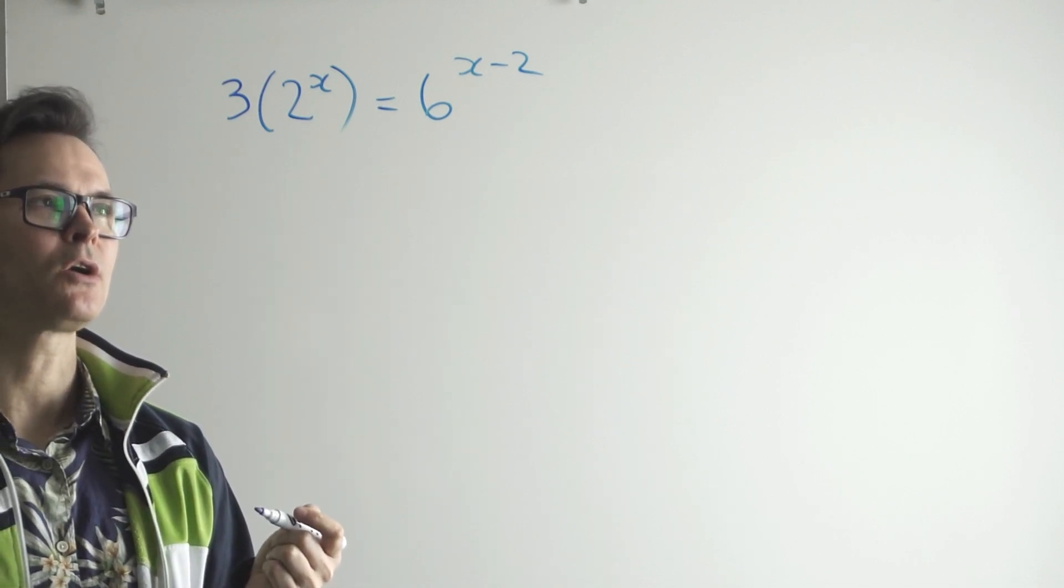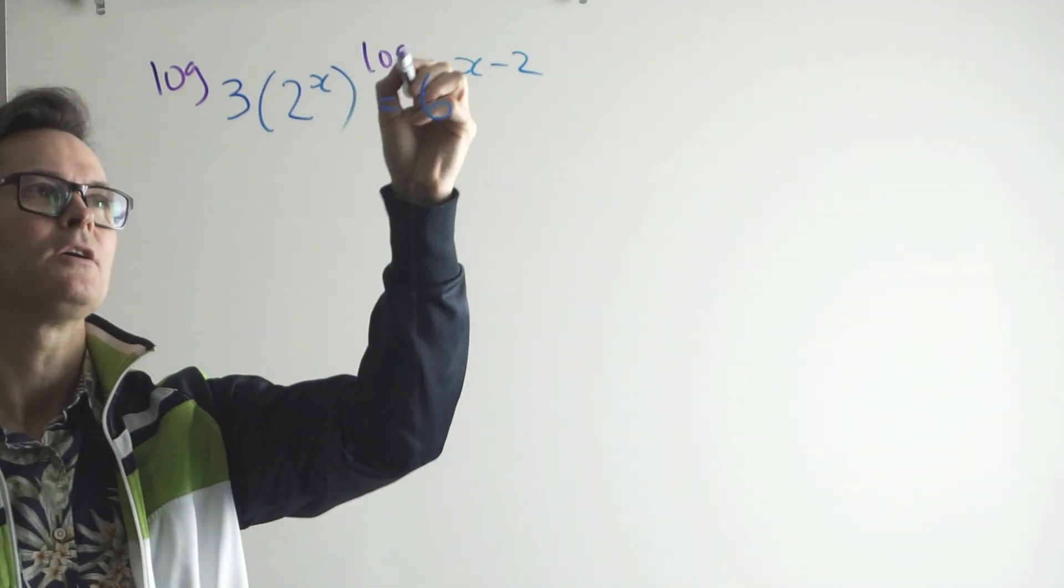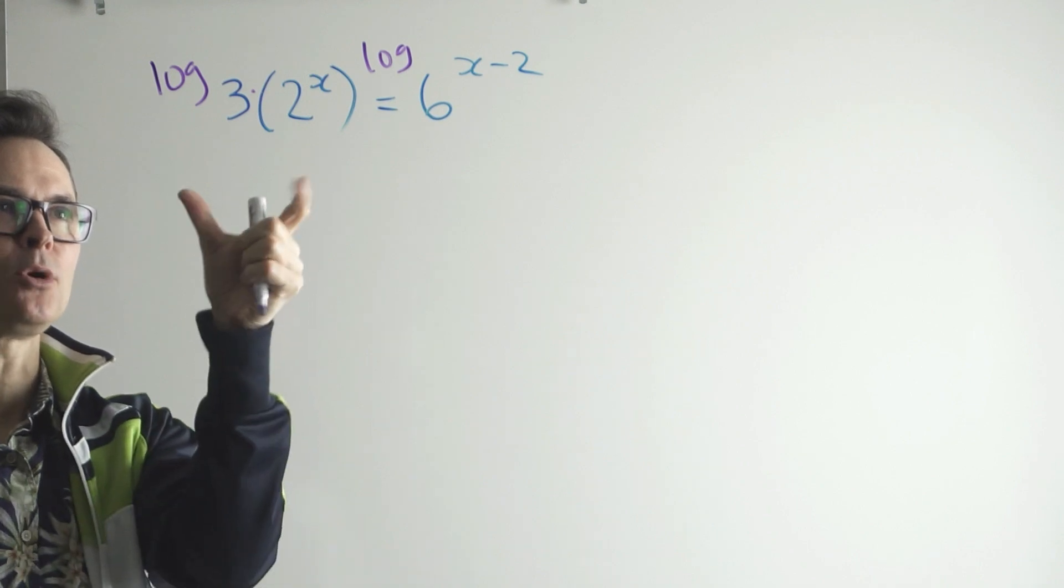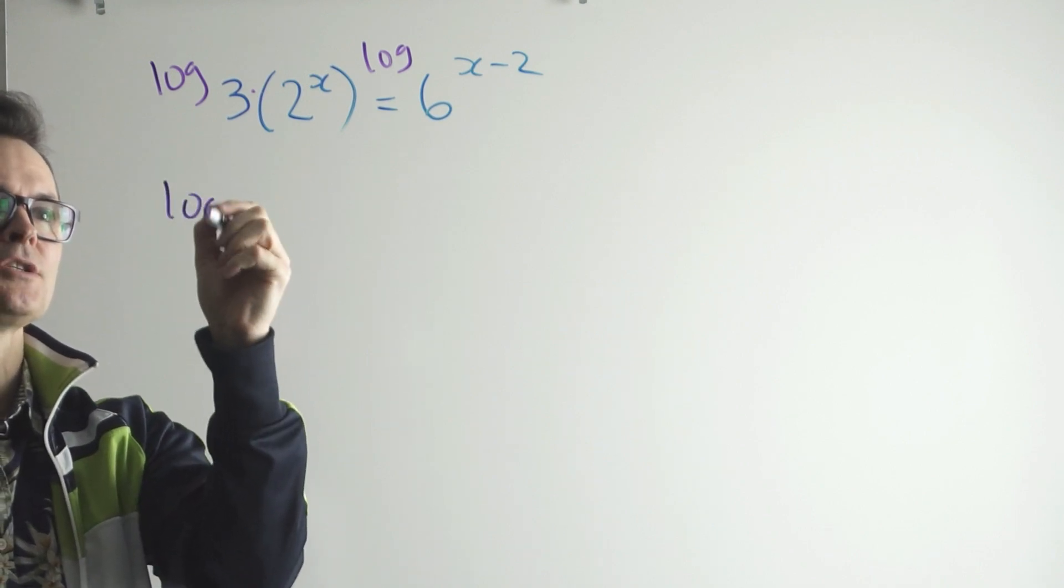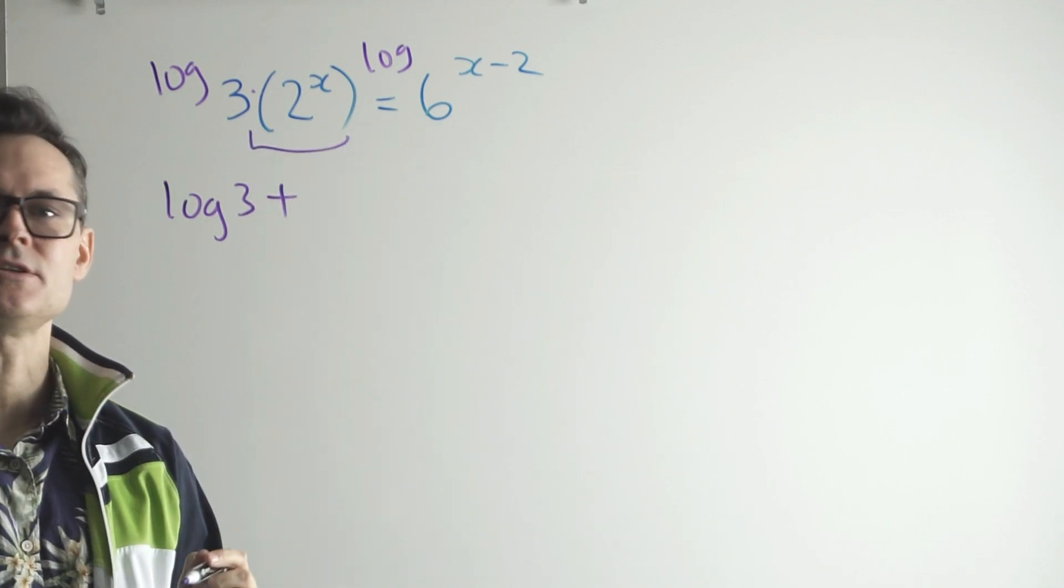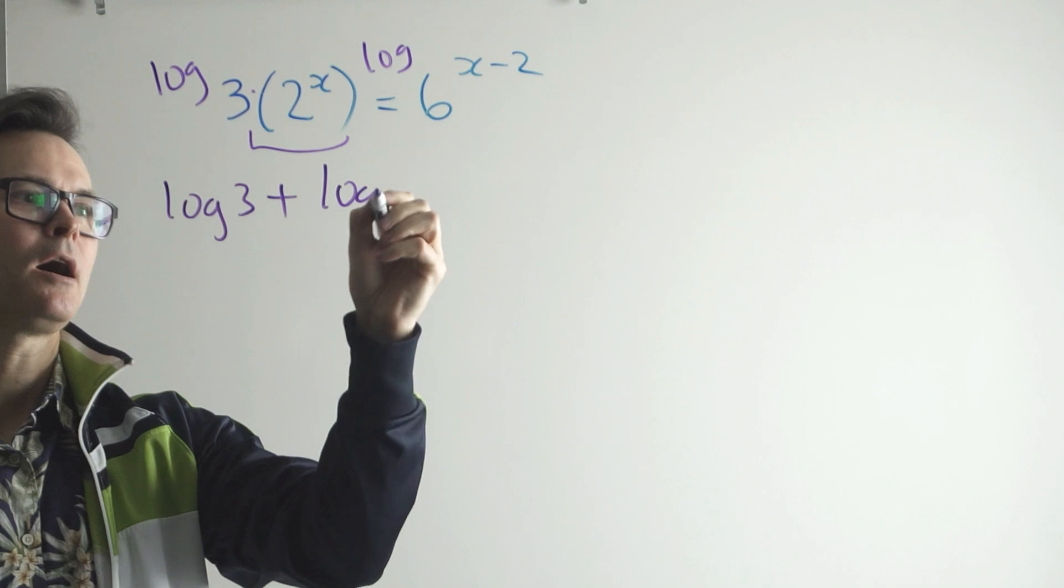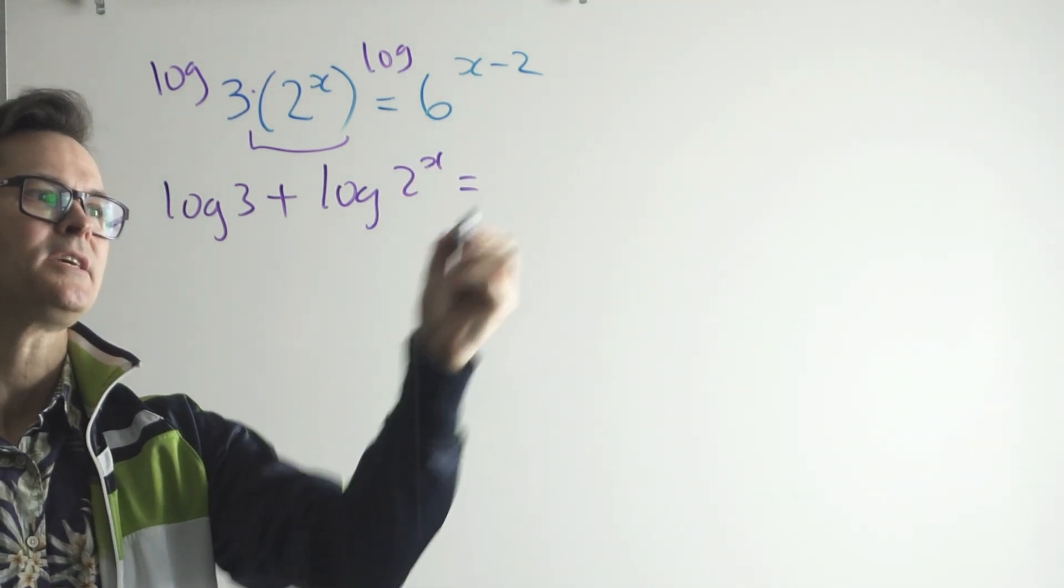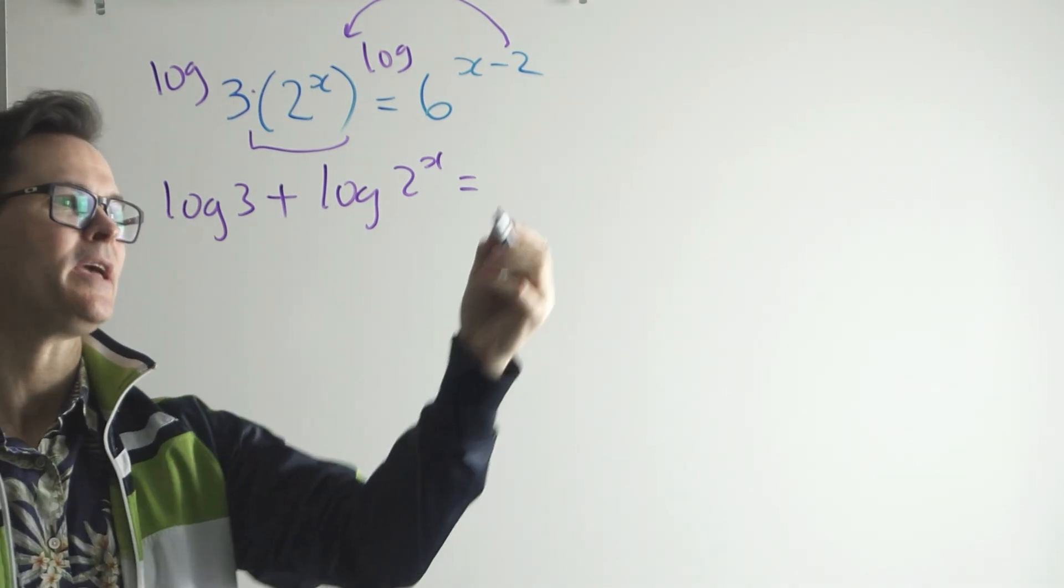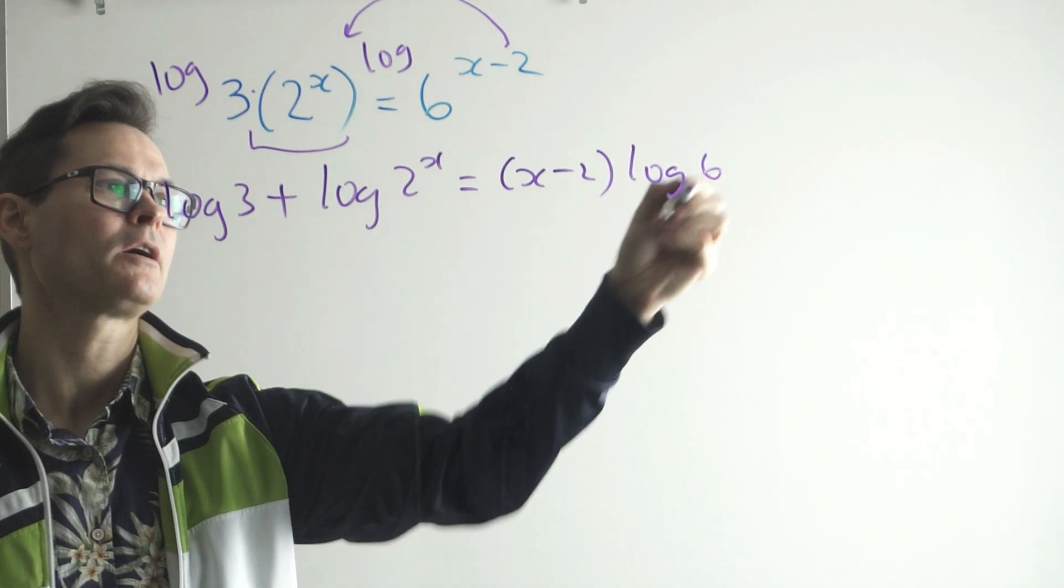So if you were asked to use logarithms, your teacher would have probably said use the action of logging, so log both sides. Then you use your log laws. You've got a product there, so you've got to pull that apart using the product law, which is log 3 plus the log of 2 to the x. And that's equal to, you can use your power law here by bringing the x minus 2 down, leaving the log of 6.